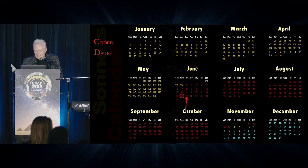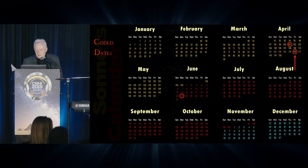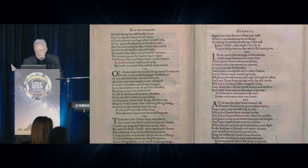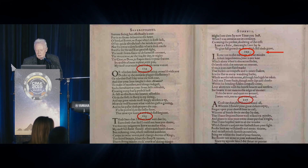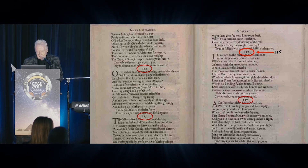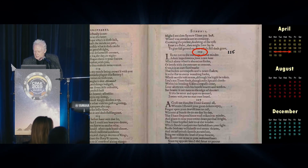I was looking at three particular interesting sonnet numbers. I looked at 116, because it's the only sonnet in the original printing where it's wrongly numbered. It goes 114, 115, 119, 117 — obviously it's supposed to be 116. Well, 116 is here, and that's April 26.